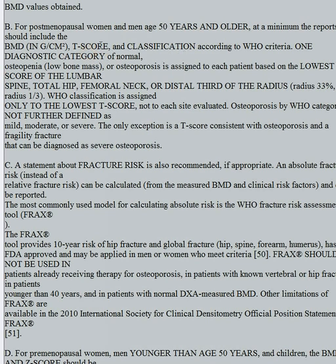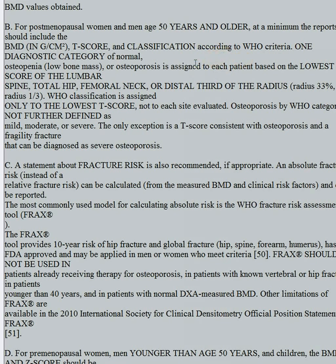These reports for 50 and older should include the bone mineral density, the T-score at each site, and a classification. One classification according to WHO criteria — just give one diagnostic category of normal, osteopenia, or osteoporosis. Don't try to break it out by area; the patient gets the whole diagnosis based on the worst area.